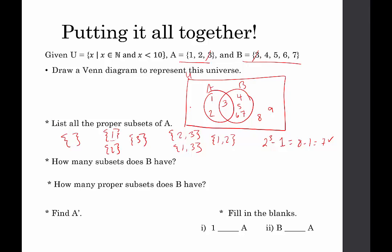How many subsets does B have? B contains five elements, so the cardinality of B is five. That would be two to the fifth, and since it's asking for subsets, two to the fifth is 32. So B has 32 subsets. How many proper subsets does B have? That would be 32 minus one, which is 31.